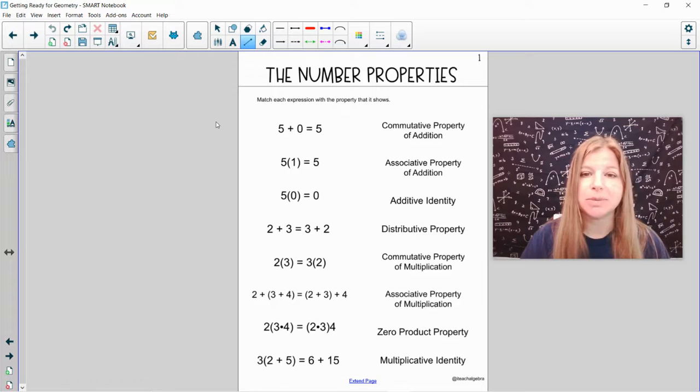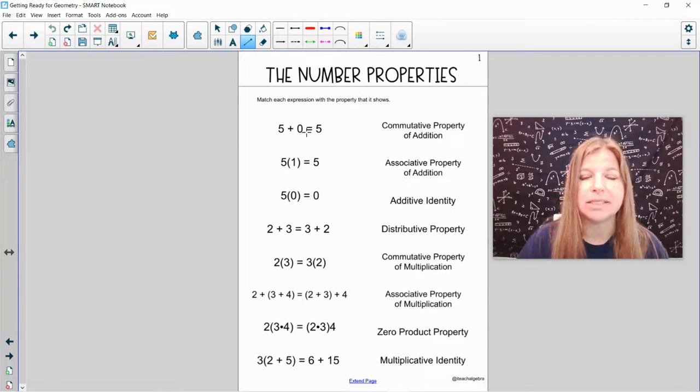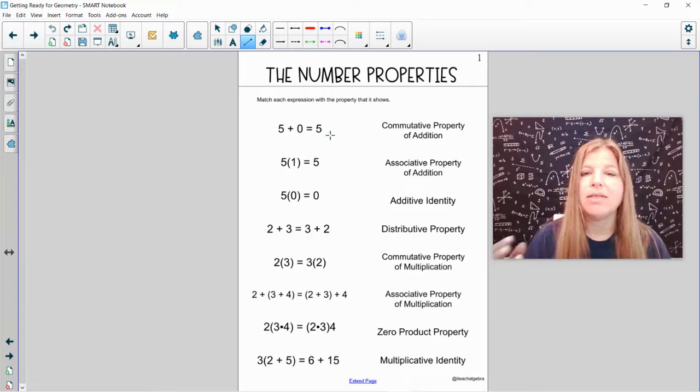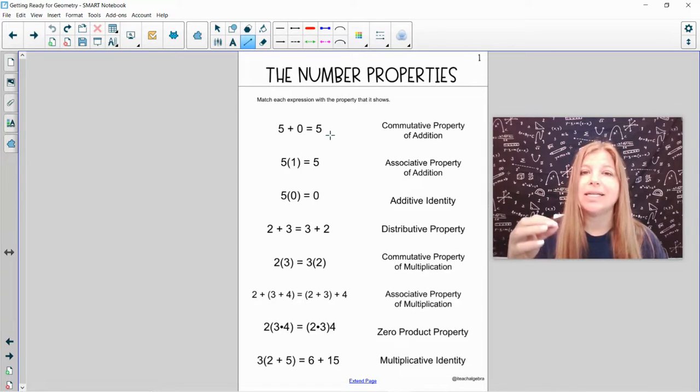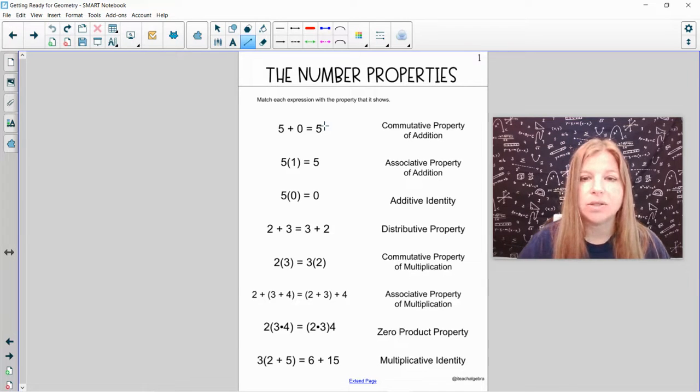It says match each expression with the property that it shows. So the first one I have here is 5 plus 0 equals 5. Now we know whenever you add 0 to anything, the result is the same. That is always what's called an identity. An identity is when the answer is identical to the original value. So 5 plus 0, adding 0 doesn't change anything to the original number, and that's why it's called an identity. So this would be what's called the additive identity.